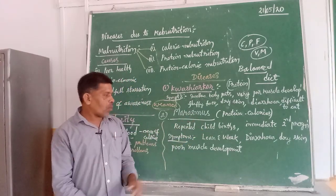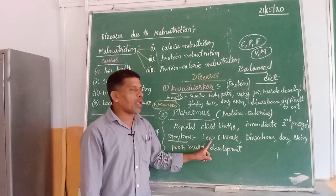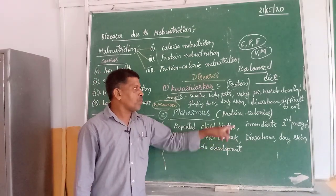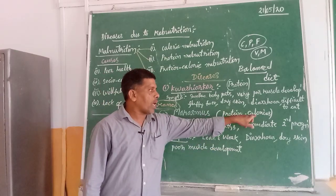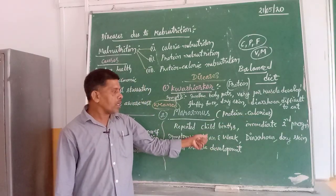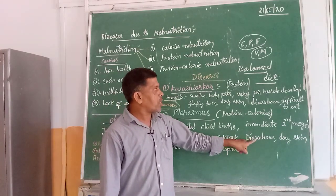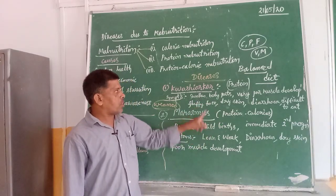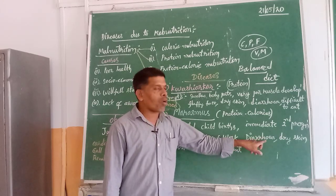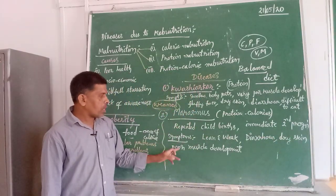The disease is called Marasmus. The symptoms include: the child appears very lean and weak, with no energy production. Since proteins are meant for body building and calories for energy production, the child has no proper muscular development and no energy in the body, leading to a lean and weak appearance. Another symptom is diarrhea — vomiting and loose motions.